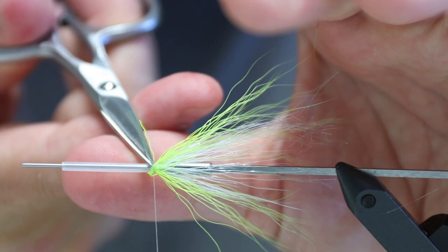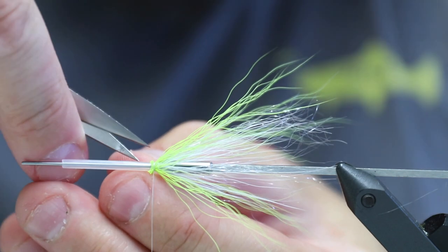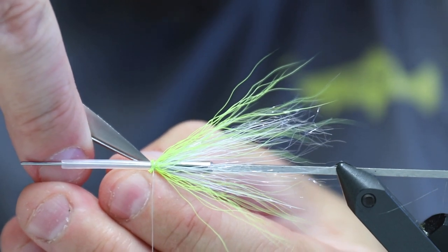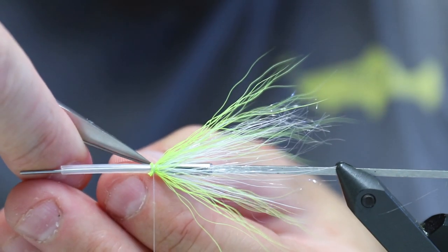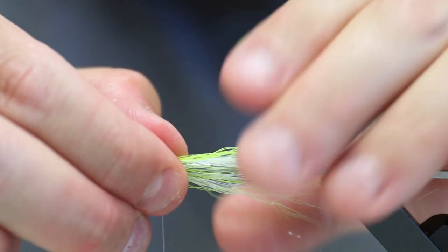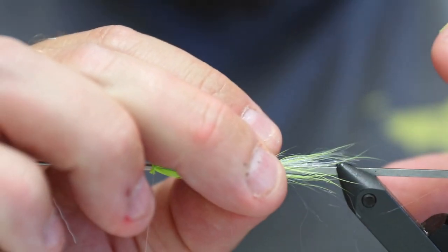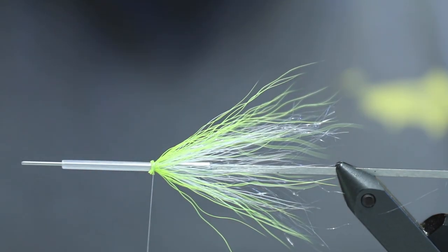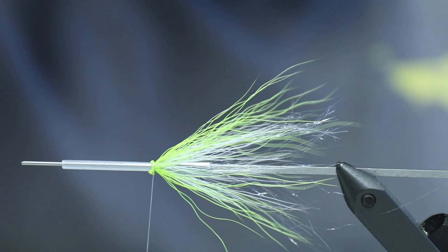And the head, the Flymen Fish Skull, is also going to make this bucktail fold backwards and not be that widely spread out. Because we want this to have the appearance of a long slender fly, and the Fish Skull is going to help with that.